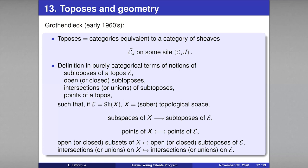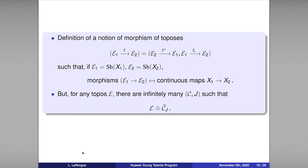The same correspondence holds for open sub-objects, intersections, and unions. The advantage is that the notion of topos is much more general than that of topological space, so you can bring the vocabulary and intuitions of geometry to a much more general setting. There is also a notion of morphism between toposes, and if the toposes are associated to topological spaces, a morphism on the topos side corresponds to a continuous map on the topological side.